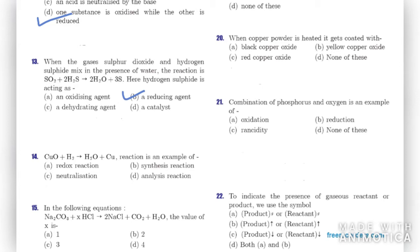Question fourteen: given a reaction, we need to identify its type — redox, synthesis, neutralization, or analysis. We can see one element being reduced and another being oxidized. Therefore it is a redox reaction.